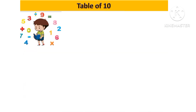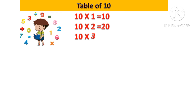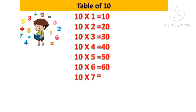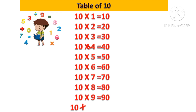Let's revise: 10 one's are 10, 10 two's are 20, 10 three's are 30, 10 four's are 40, 10 five's are 50, 10 six's are 60, 10 seven's are 70, 10 eight's are 80, 10 nine's are 90, 10 tens are a hundred.